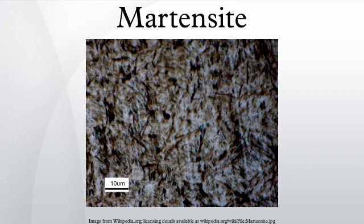Martensite is not shown in the equilibrium phase diagram of the iron-carbon system because it is not an equilibrium phase. Equilibrium phases form by slow cooling rates that allow sufficient time for diffusion, whereas martensite is usually formed by very high cooling rates. Since chemical processes accelerate at higher temperature, martensite is easily destroyed by the application of heat. This process is called tempering.